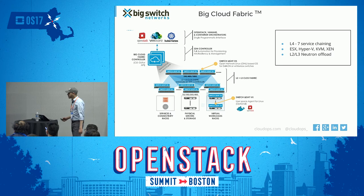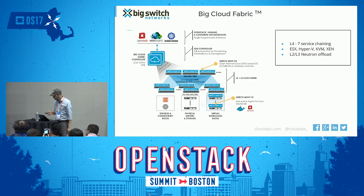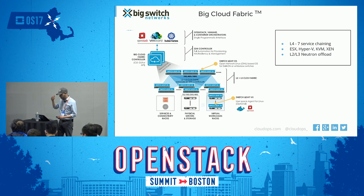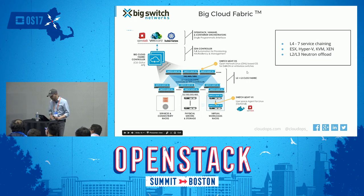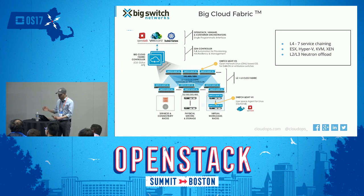Big Switch Networks — if you're doing white box with either Dell or HP and want a solution that orchestrates your physical fabric and makes it look like one big switch, this is what Big Switch does. You have two options: you can install the agent in the hypervisor, the Switch Light VX, which lets you offload layer 3 into the fabric. Or you can choose not to install the agent — which pushes flows into the kernel OVS component. In that case, you will be using the Neutron reference architecture components for layer 3.